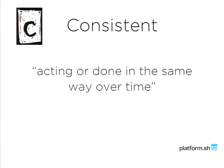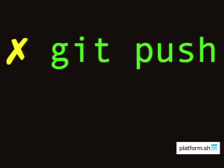Consistent means acting or done in the same way over time. When you want to deploy to your local development, staging, or testing environment — how do you do it? The world is showing us, as it consolidates through many technologies and industries, that the most consistent way to deploy anything these days is through Git push. Whether you try OpenShift or Platform.sh, deployment is simply Git pushing whatever you've done in your repository to whatever environment you're deploying to, and that will do the OCD deployment on that environment.